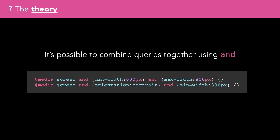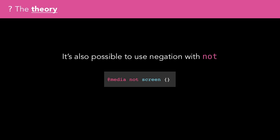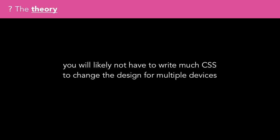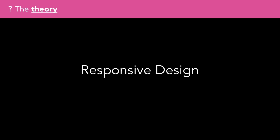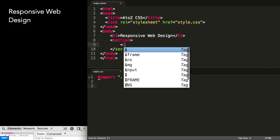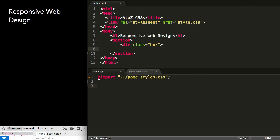It's possible to combine queries together using the AND keyword. It's also possible to use negation with NOT, and limit applicability using ONLY. These media blocks can contain any CSS you'd write elsewhere in the stylesheet and cascade the same way too. This means you'll likely not have to write that much CSS to change the design for multiple devices. Media queries allow conditional styling when certain device characteristics are true, so we can use them to control the styling of a page across a range of different devices or device sizes.